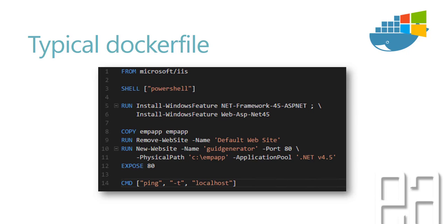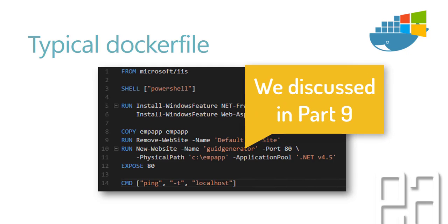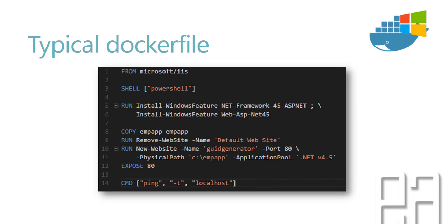You can see there is a FROM microsoft/iis. The FROM instruction specifies the image you're going to pull from, which is microsoft/iis. There is a SHELL instruction turning on PowerShell, which opens PowerShell within that container. Then it runs lines to install Windows features: .NET Framework 4.5 ASP and the web ASP.NET feature, enabling those two features within your Windows Server Core or Nano Server. Then it copies files from your host to the container — COPY emp_app emp_app — copying the employee app from the current context of the Docker file on the host machine to the container.